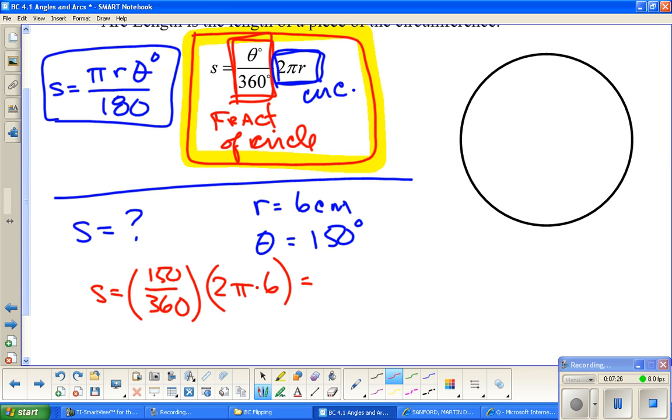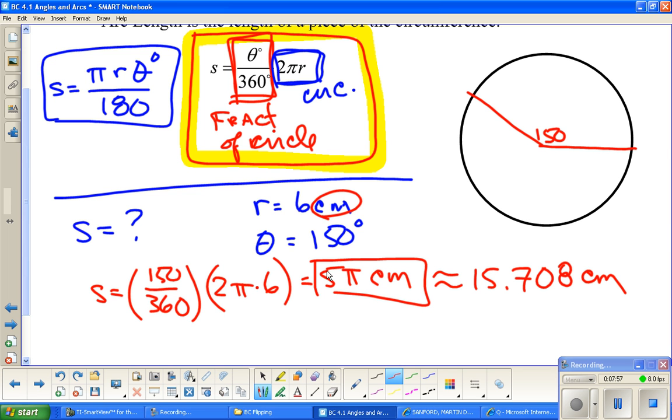At this point, it's a question of how we're going to leave this. This is really just 5π. If this was in centimeters, so is this. 5π is 15.70 something or other, so I'll call it 15.708 centimeters. So again, what we just found: here's roughly 150 degrees, we have a radius of 6 centimeters. So this distance is about just short of 16.